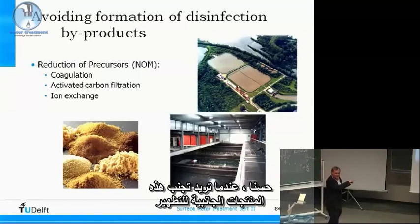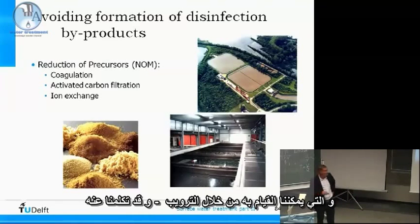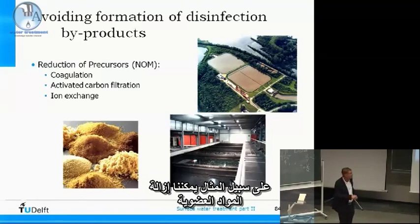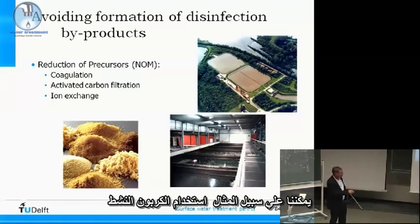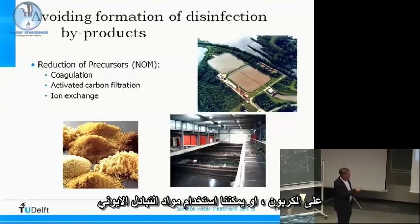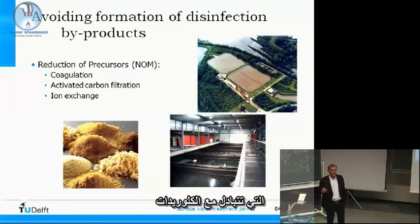To avoid disinfection byproducts, you can remove the organic material before chlorination. This can be done by coagulation at low pH with high concentrations of iron chloride. You can also use activated carbon to remove natural organic matter, or use ion exchange resins to remove humic acids via exchange with chlorides.